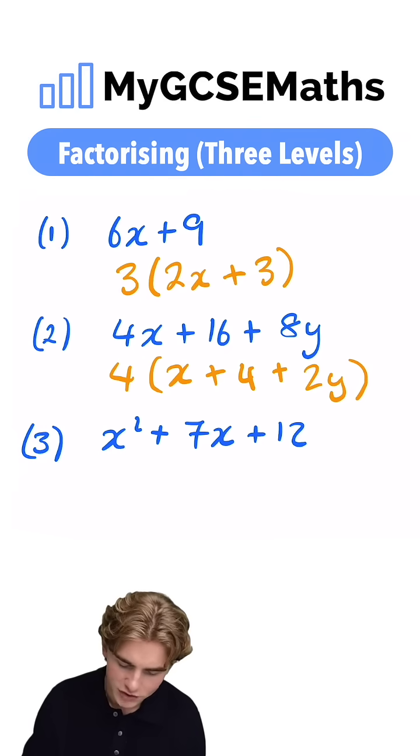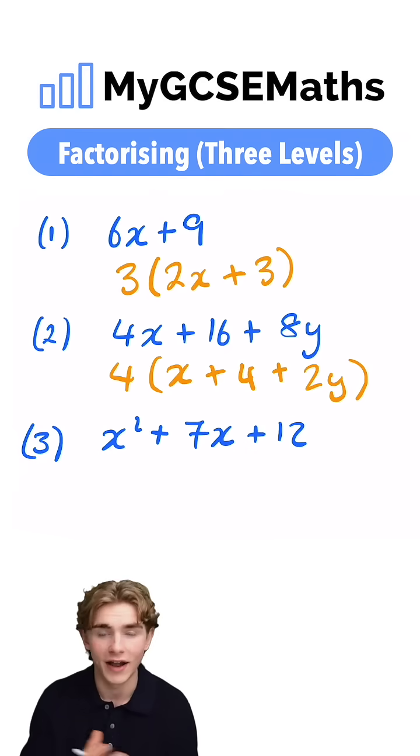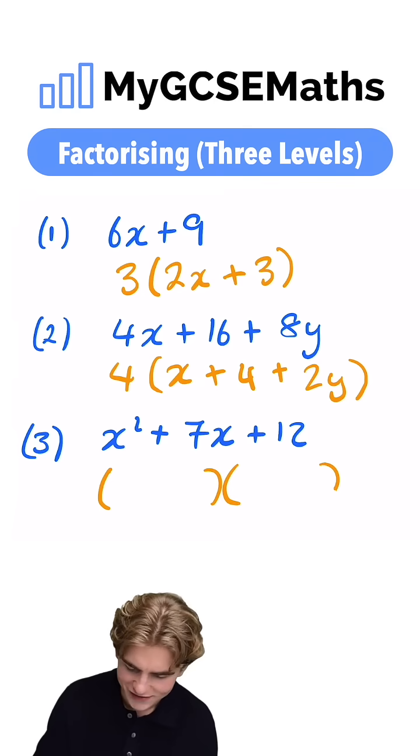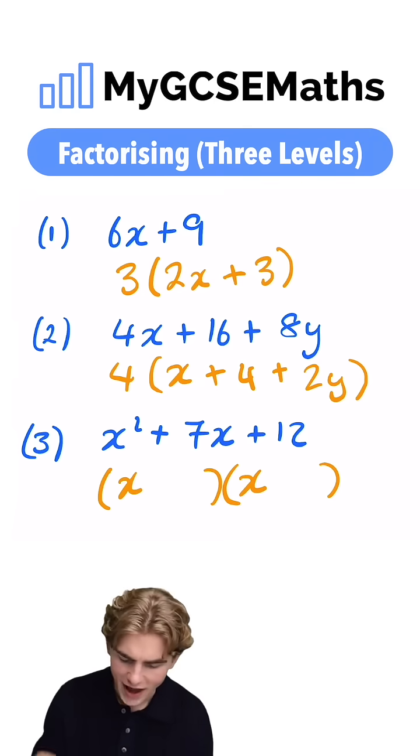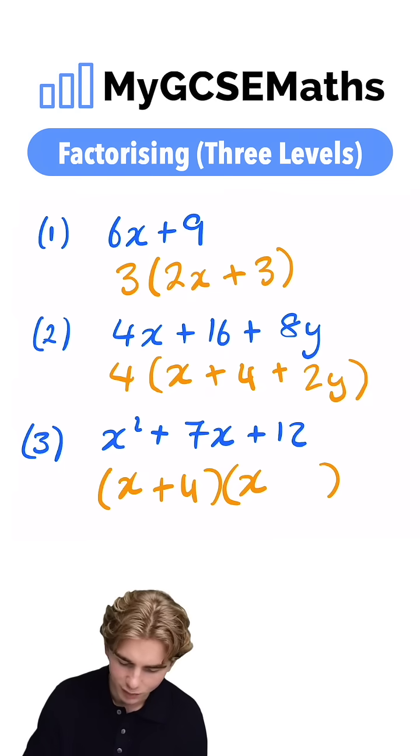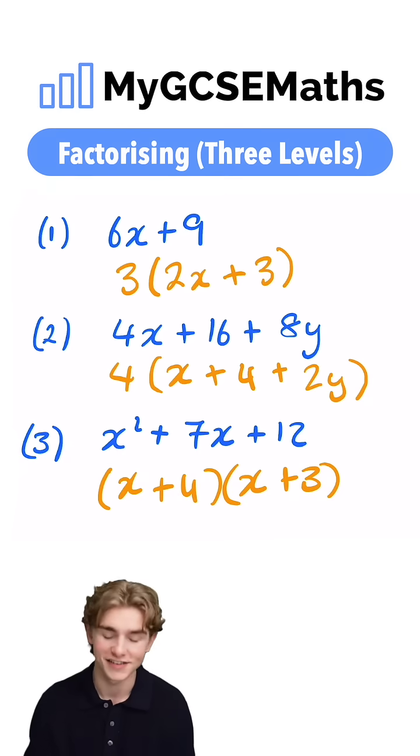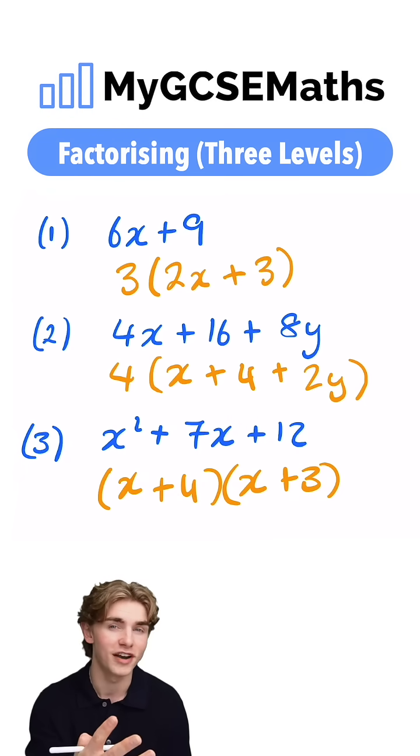We need to find two numbers which multiply to give 12 and add to make 7. That's going to be 4 and 3. So we can write this as a pair of double brackets with x's at the front, an x at the front of here, and an x at the front of here. We're going to have here plus 4 and plus 3 because, guys, remember, 4 times by 3 gives us 12, and 4 plus 3 gives us our 7. That guys, is going to be how we factorize these three expressions.